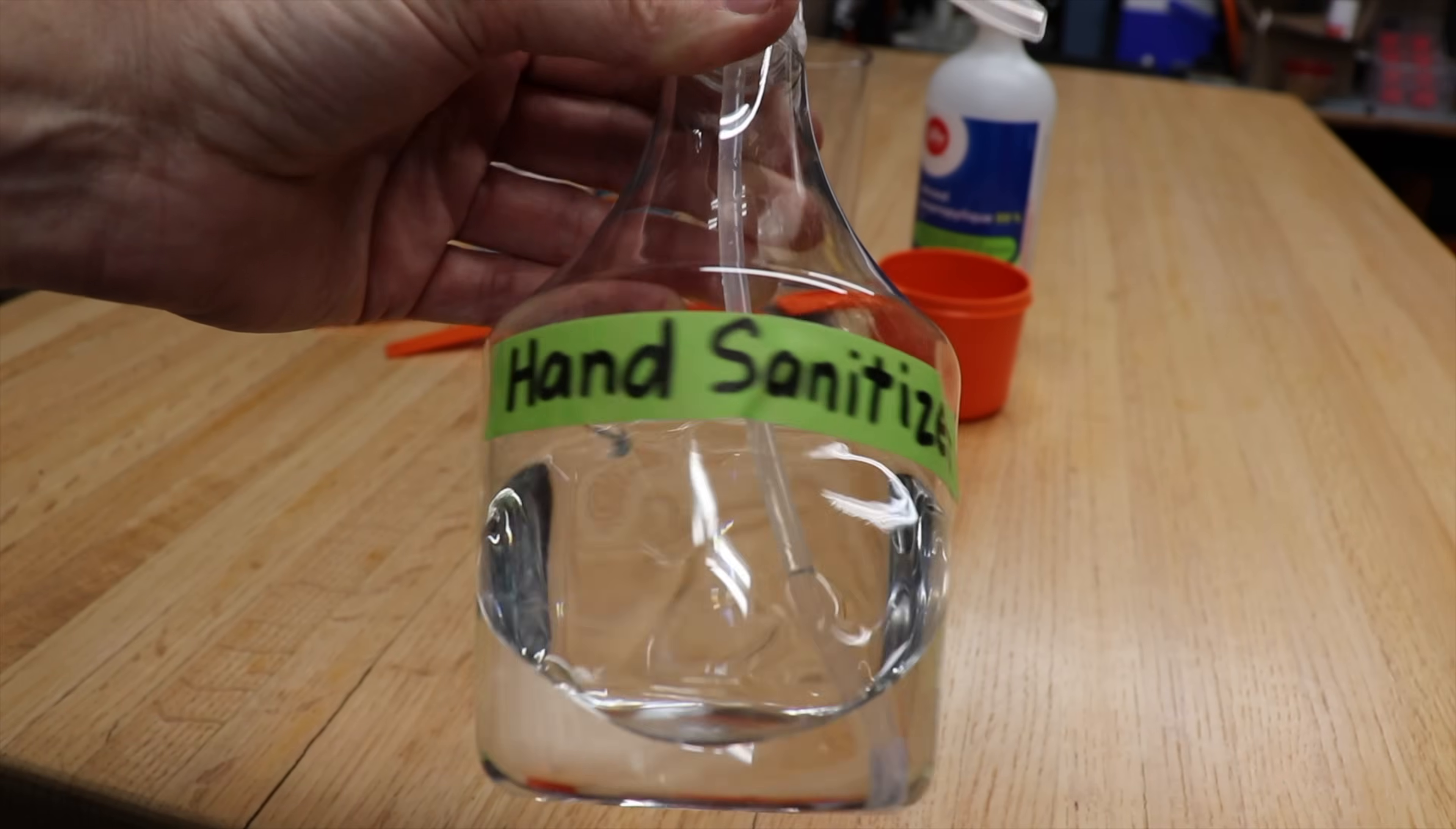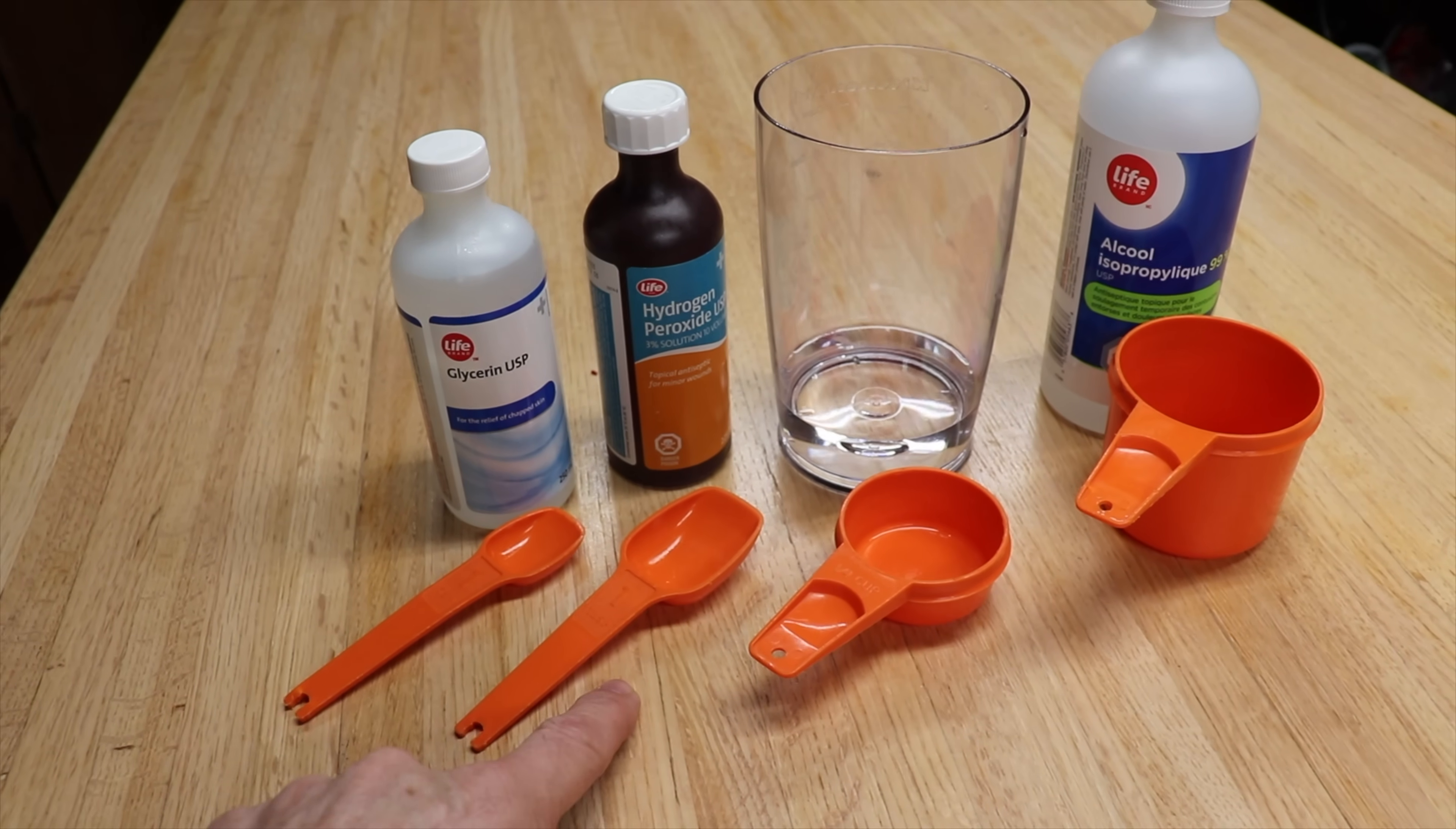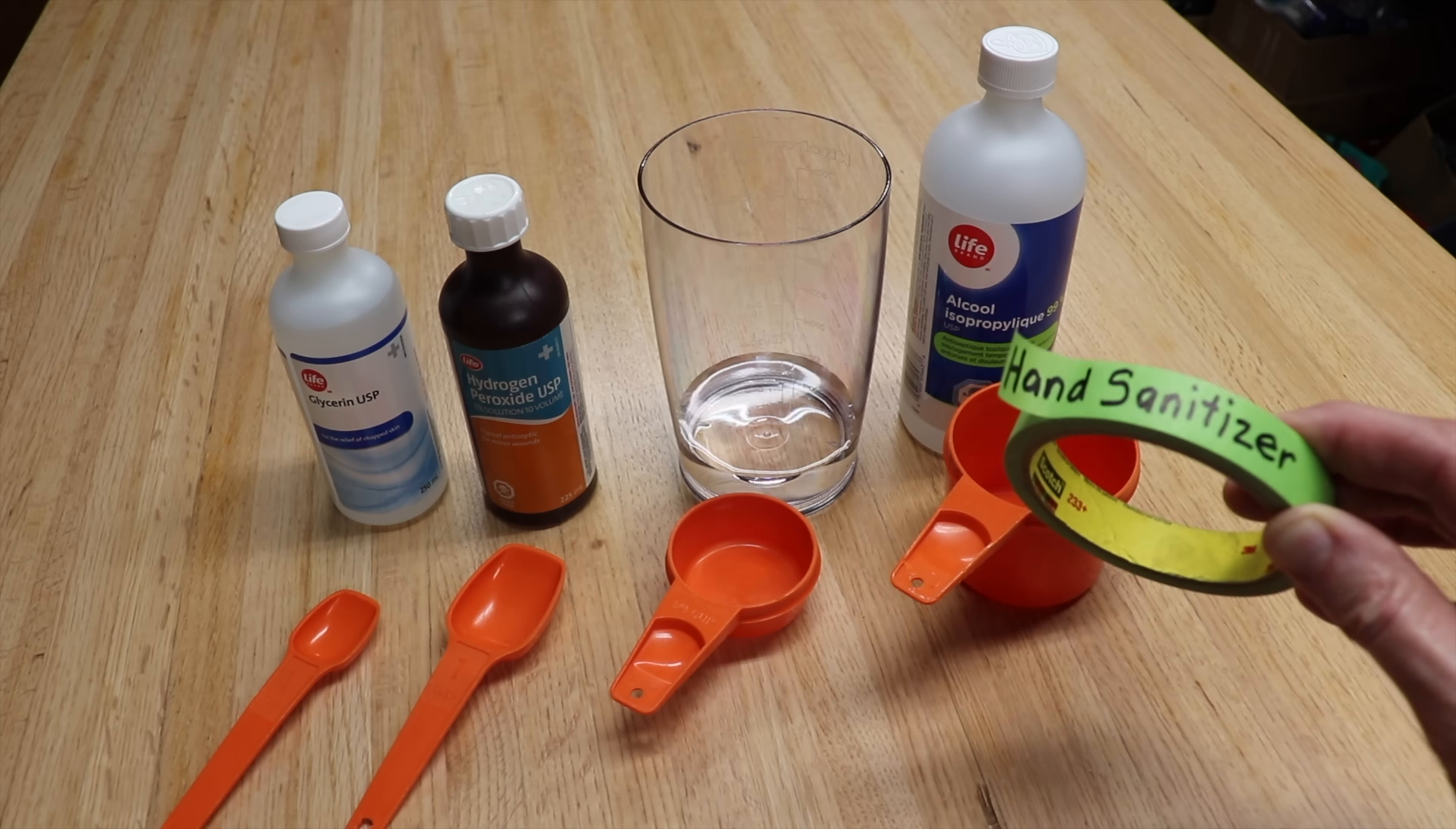And the final step is to label the bottle. So one more time, a teaspoon of glycerin, a tablespoon of hydrogen peroxide, a quarter cup of boiled water that's been cooled, and one cup of isopropyl alcohol. And remember to label the bottle.